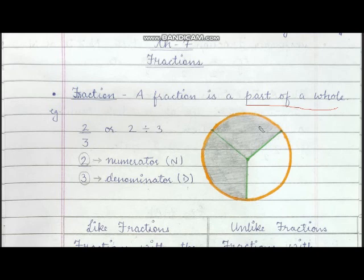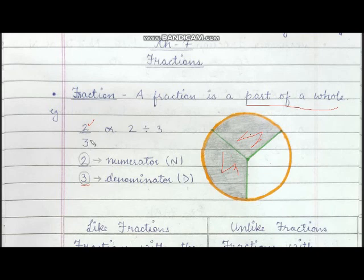For example, take a circle and there are 3 parts in the circle, in which 2 parts are shaded and 1 part is not shaded. So there are 3 parts in total — we will write 3 in the bottom part, and 2 shaded parts we will write in the top part. So we will write this fraction as 2 upon 3, or 2 by 3, and this means 2 divided by 3.